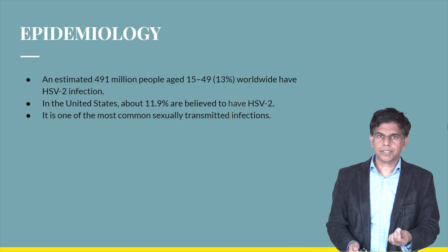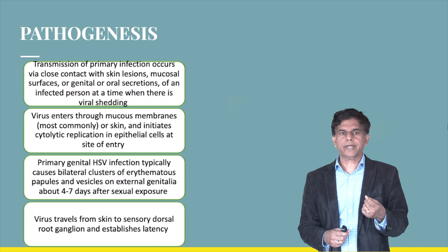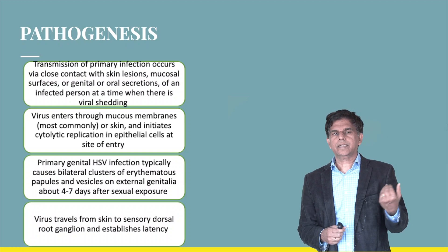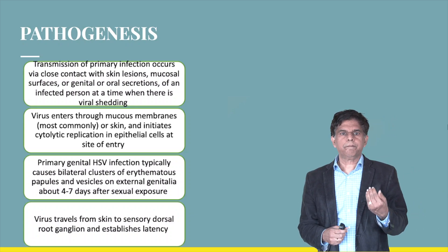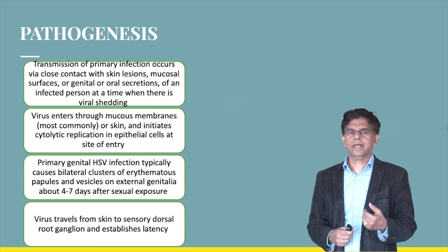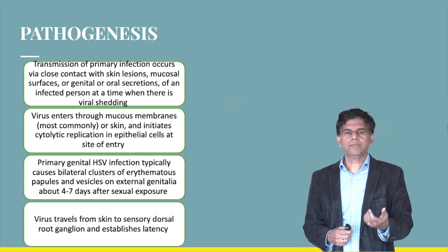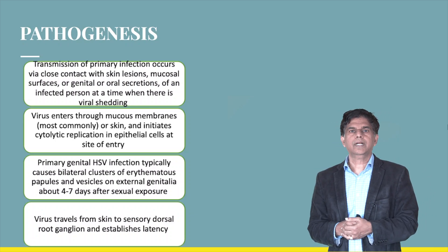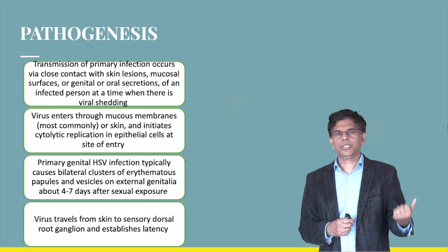Looking at the pathogenesis, transmission occurs through close or sexual contact with mucosal surfaces, genital or oral secretions from an infected person shedding the virus. The virus enters through mucous membranes or skin, followed by cytolytic replication in epithelial cells at the site of entry. Primary genital herpes infection typically forms clusters of papules and vesicles on the external genitalia, usually four to seven days after exposure. The virus then travels through sensory dorsal root ganglia, where it remains latent permanently.